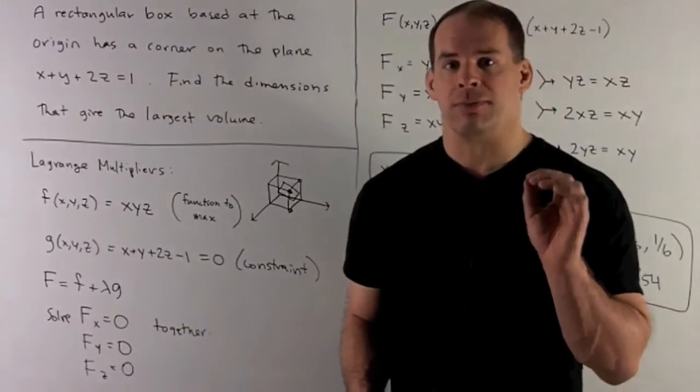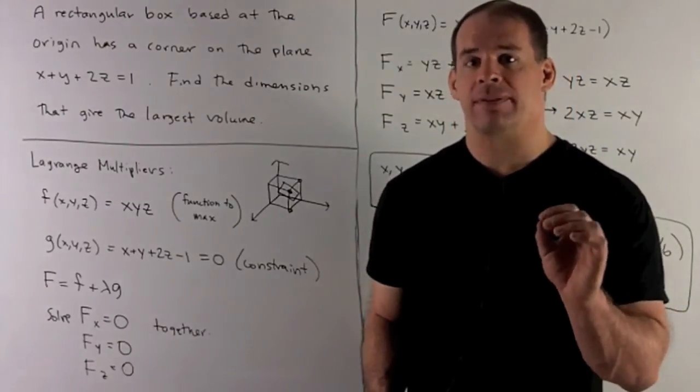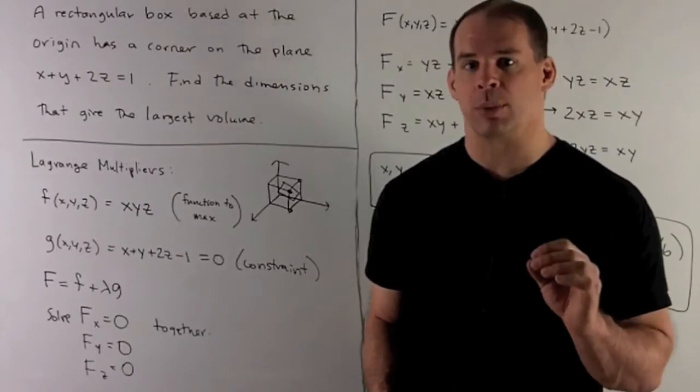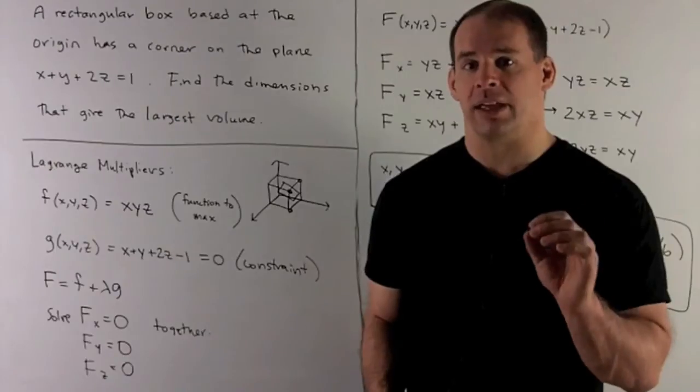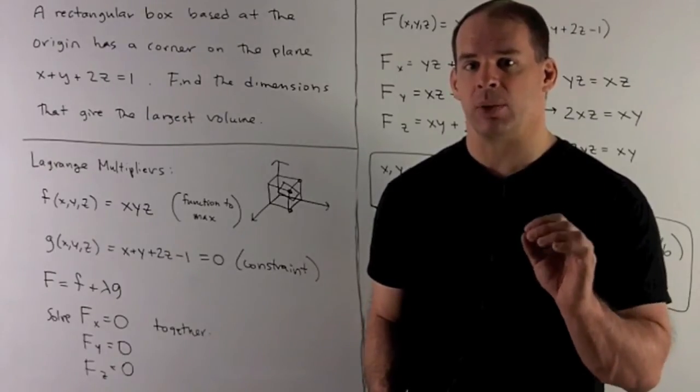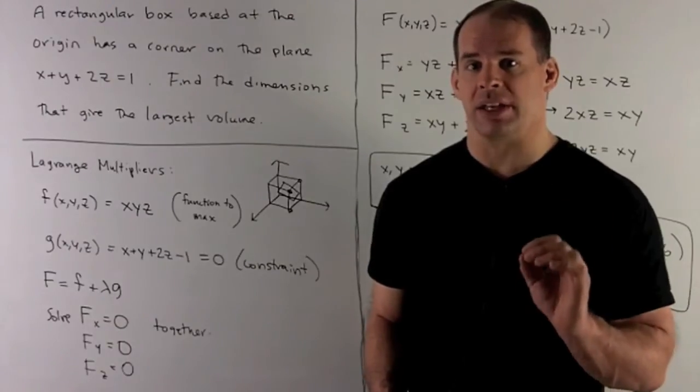Now, I form function capital F, which is just little f plus lambda times g. Lambda is going to be our Lagrange multiplier. We're going to take the partials of this with respect to x, y, and z, set them equal to 0, and then solve them simultaneously.